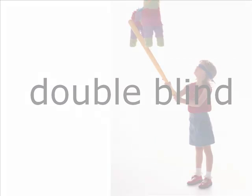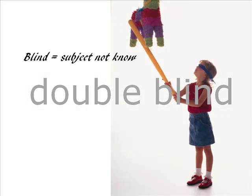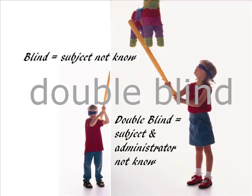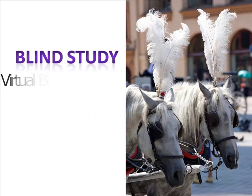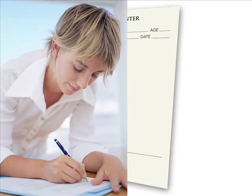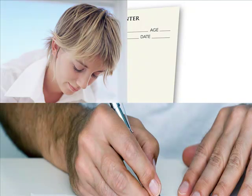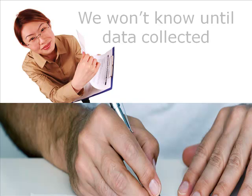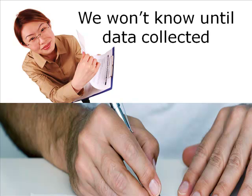In a blind study, the subjects don't know if they are getting the magic drug or the placebo. In a double blind study, the person administering the drug also doesn't know which is the magic formula and which is simply sugar. If our study was a blind study, the subjects would not be told if they were left or right handed. Since we're asking them the question, they can't be completely blind on the matter. What we can do is be sneaky — we ask them lots of questions, including the one about handedness, and we don't tell them that the experiment is about handedness. To make our study double blind, we'll have someone else administer and score the intelligence test, so we won't know their handedness or IQ until the experiment is over.